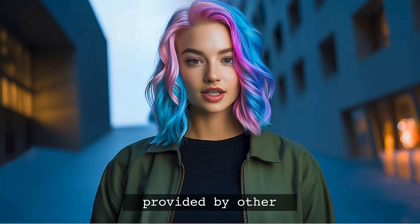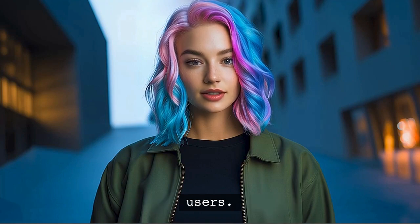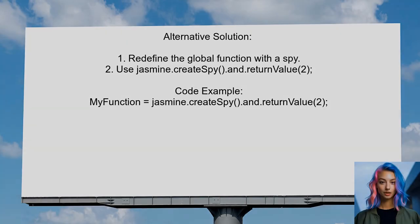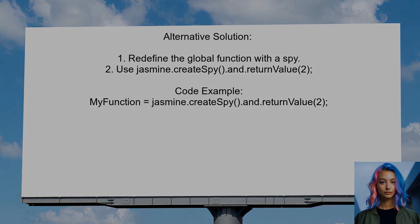Now let's look at the answers provided by other users. An alternative approach suggested by another user is to redefine the global function using Jasmine's createSpy method. This allows you to easily return a specific value when the function is called.